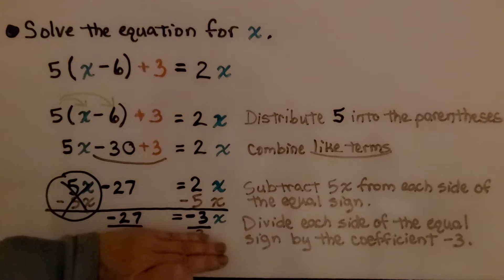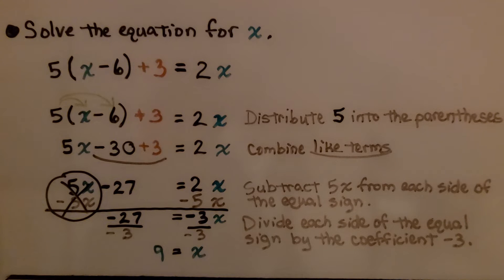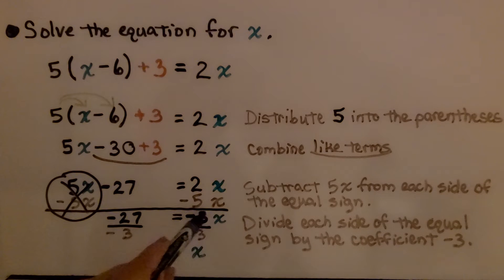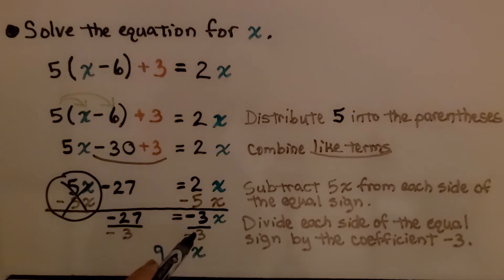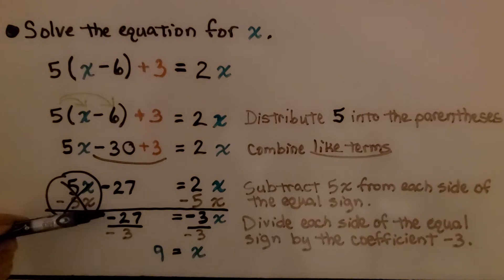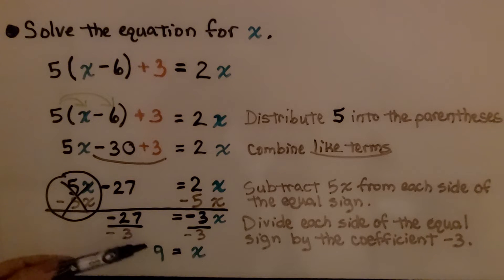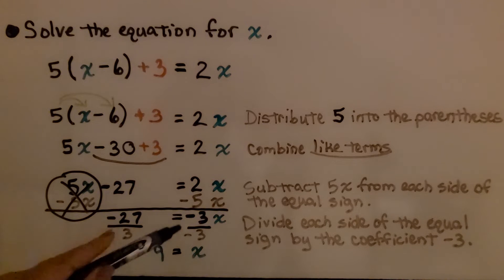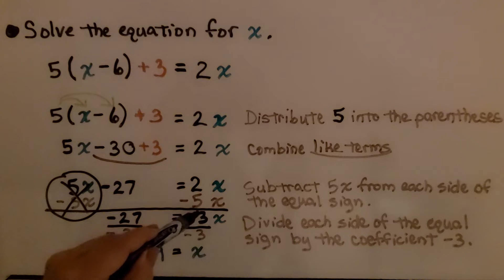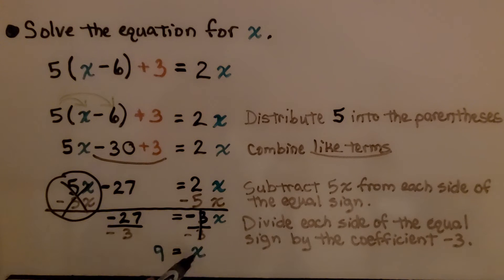Now we have negative 27 is equal to negative 3x. We divide each side of the equal sign by the coefficient negative 3. This is multiplication — negative 3 times some number x — so our inverse operation is division. We divide both sides by negative 3. We have negative 27 divided by negative 3. We have two negatives, that's going to make a positive, so the left side is 9. Negative 3 over negative 3 is 1, so we have 1x. We know x is equal to 9.